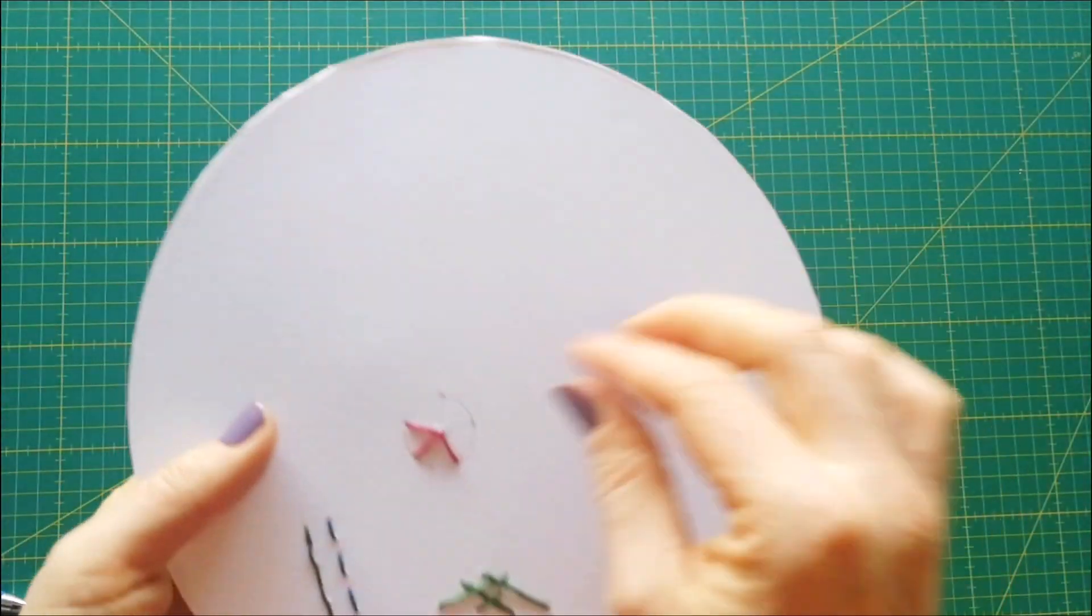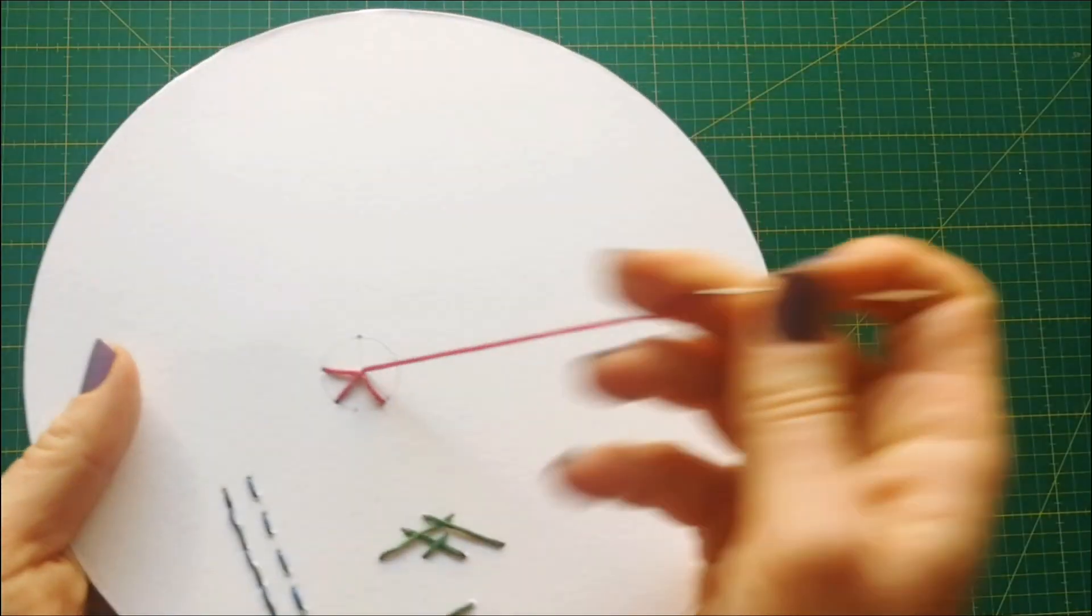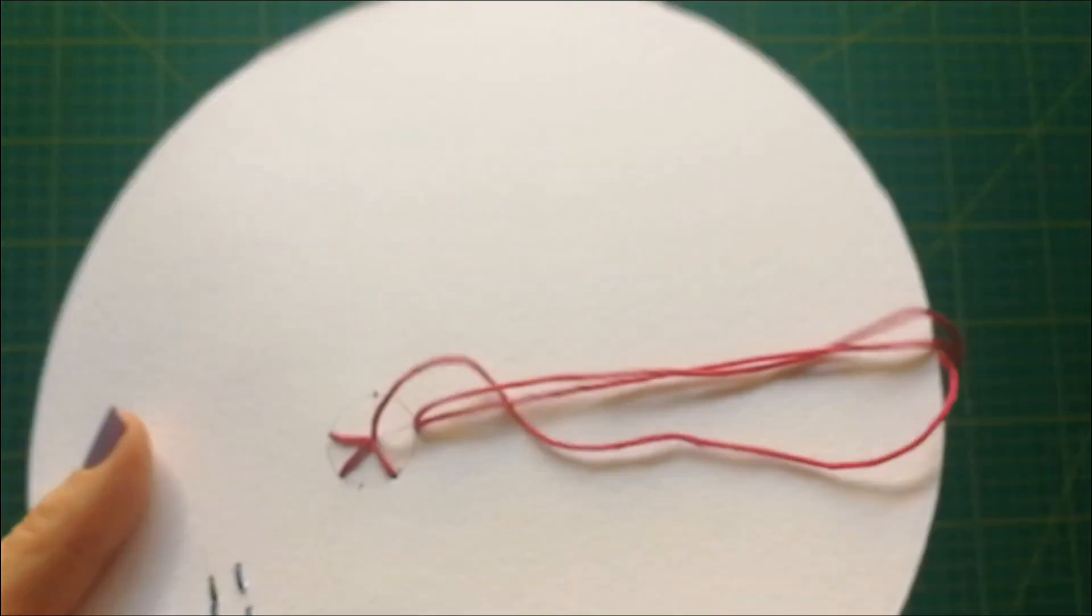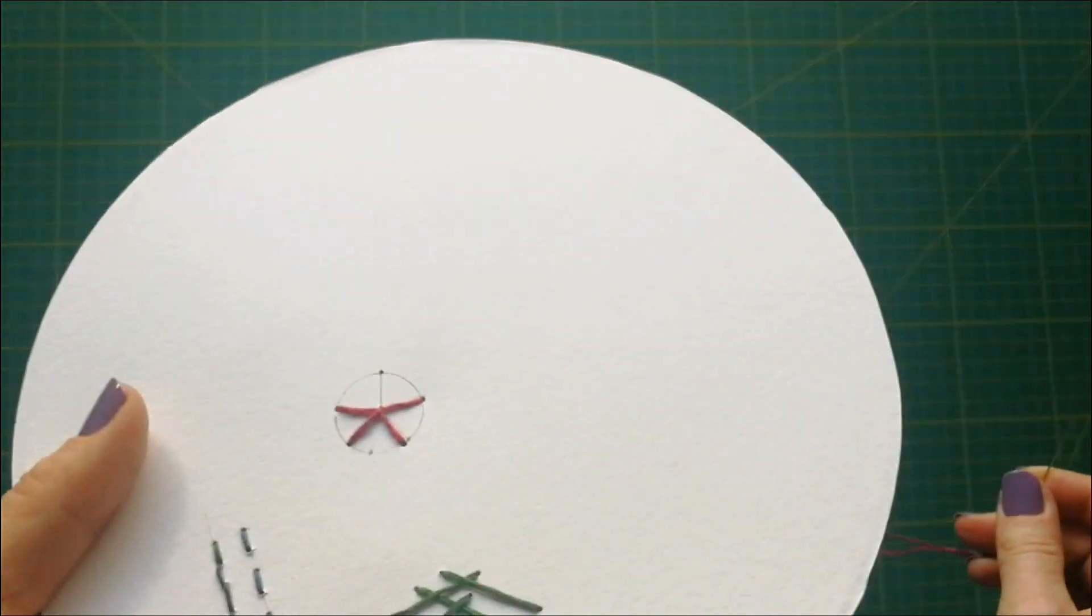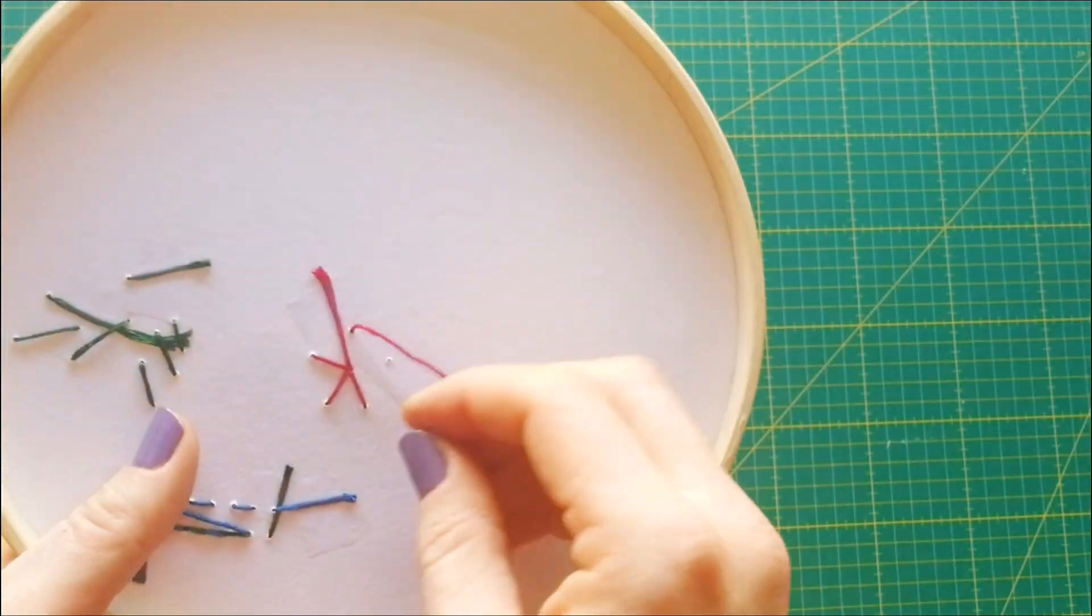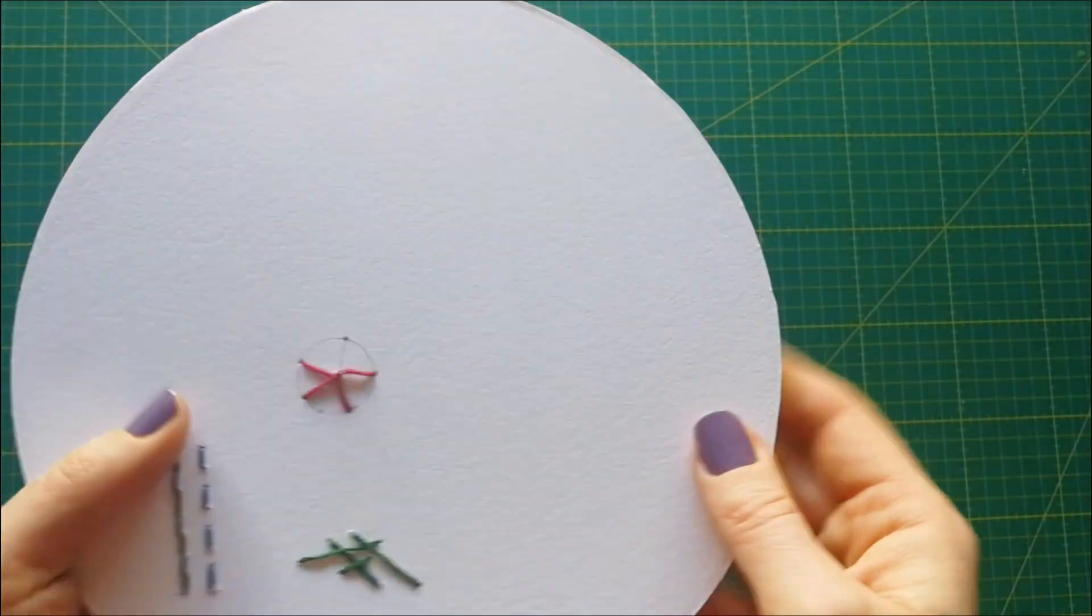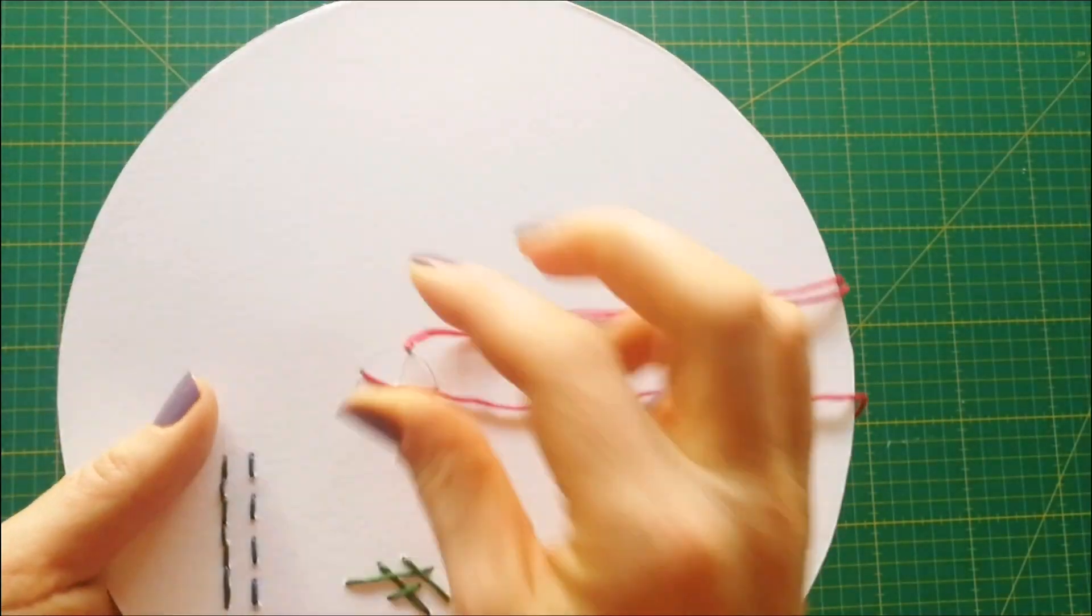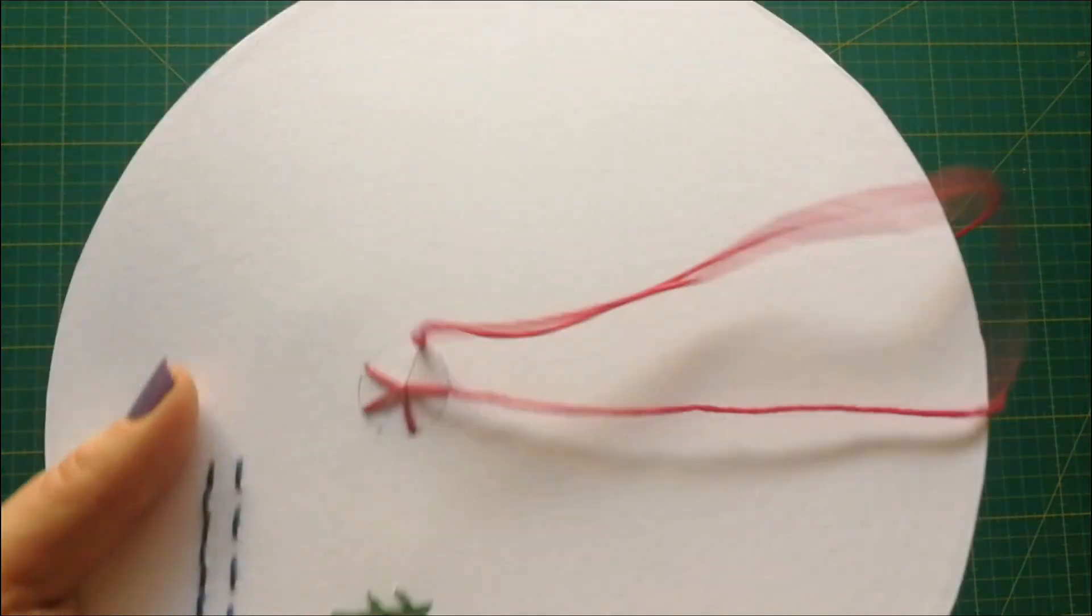If you make a bigger circle, I would recommend you to start working with 6 strands and later on with 12 strands. If you make a smaller circle, I would recommend starting with 2 or 3 strands and then double the strand to get 4 or 6 strands.